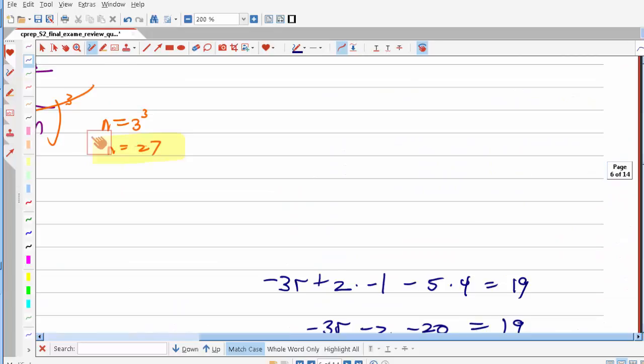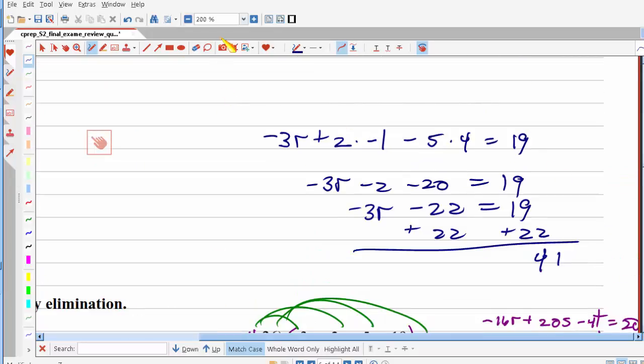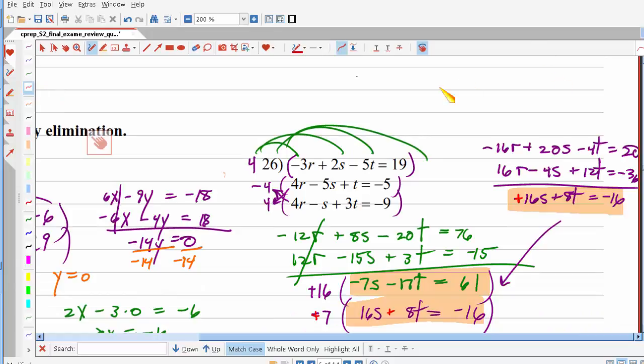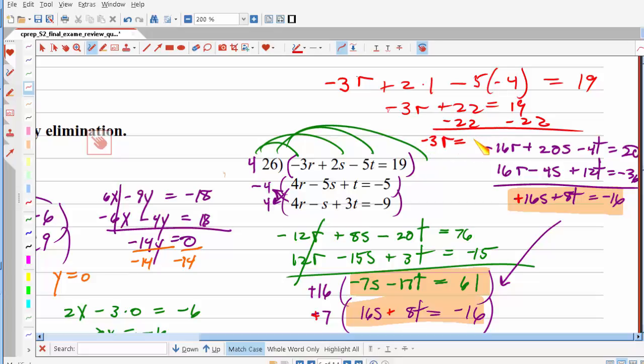So, I'm going to take those back into my original equation. My, the first one. And hopefully it's going to work out. This time. My battery is running low. So, you know what? I'm going to pause this and go plug my computer in before it dies. Okay. I think this time it works. So, I put negative 3r and s is 1. So, plus 2 times 1 minus 5 times negative 4 equals 19. So, that's negative 3r plus 22 equals 19. Subtract 22. And you get negative 3r equals negative 3 divided by negative 3. And you get r equals 1.